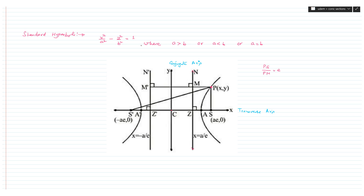The standard equation of a hyperbola is x²/a² - y²/b² = 1. The eccentricity of a hyperbola is the square root of 1 + b²/a². The foci lie at points (ae, 0) and (-ae, 0). The length of the latus rectum of the hyperbola is also 2b²/a, very similar to that of an ellipse.